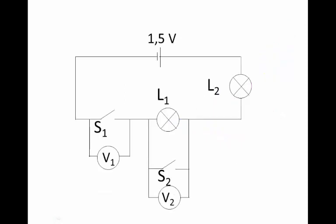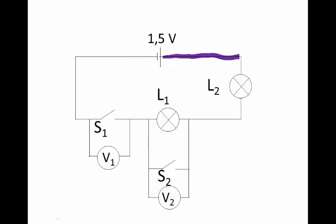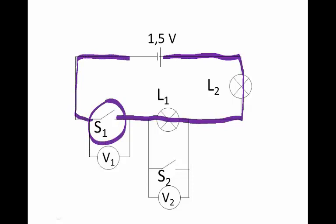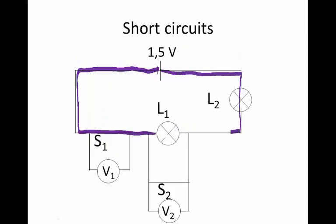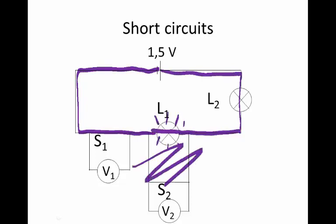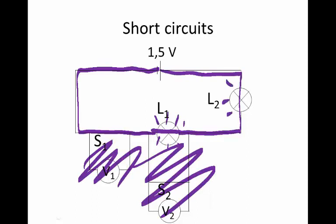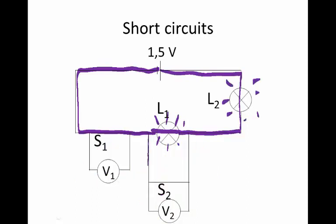Let's look at this circuit here. Again, we have the 1.5 volt cell connected to two bulbs, and we have a switch which is open at the moment. Across one of the bulbs, we have another switch which is open. Now let's say we close the first switch so that we do have a complete circuit — the bulbs will shine.